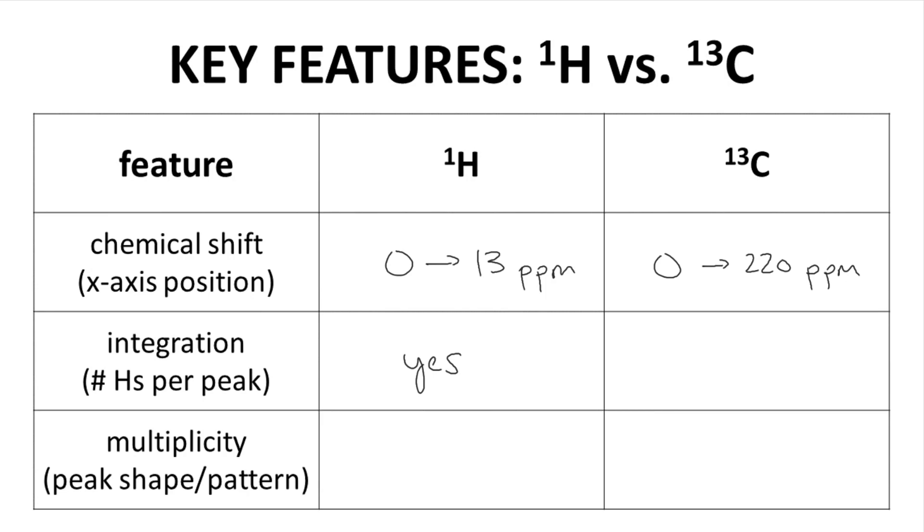C13 spectra are very rarely integrated in the same way as a proton spectrum. All carbon nuclei do not uniformly generate the same signal intensity. In other words, in a typical C13 spectrum acquisition, one carbon may have a bigger peak than another carbon. So, you can't quantify the number of carbons in a signal based on the area under the NMR peak. That's not terrible, but it is a key difference between proton and C13 spectra.